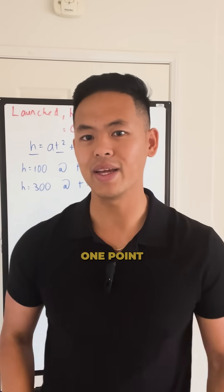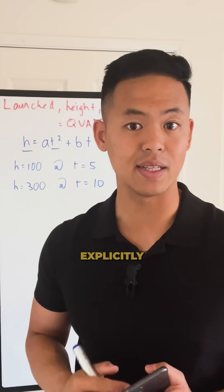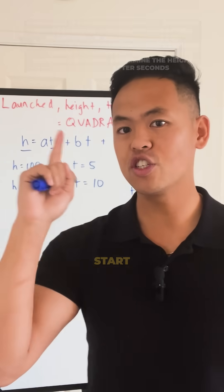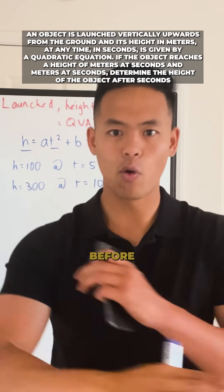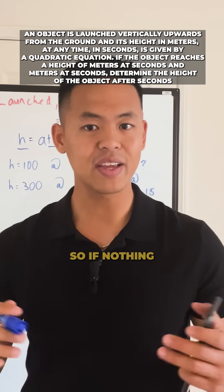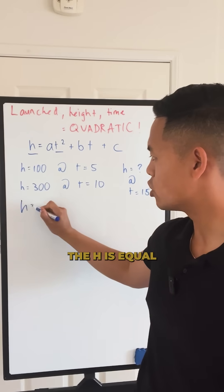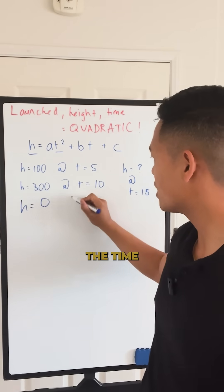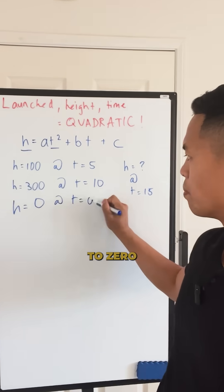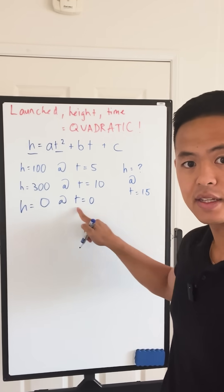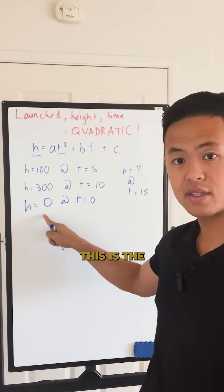However, there is one point that the problem does not explicitly tell you. It says we start on the ground before anything happens. So if nothing has happened yet and it's on the ground, H equals zero and time equals zero. This is the initial starting point and the initial height.